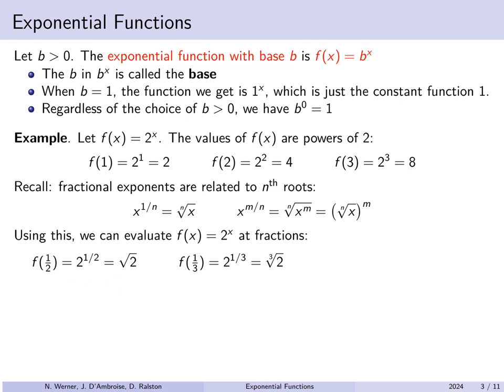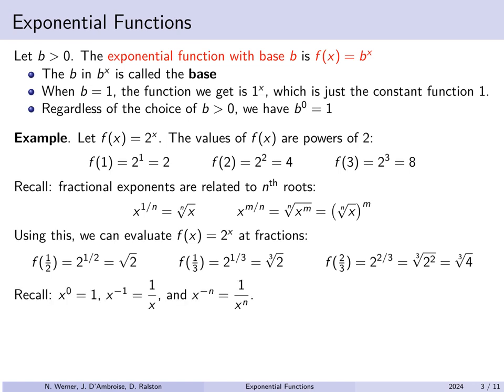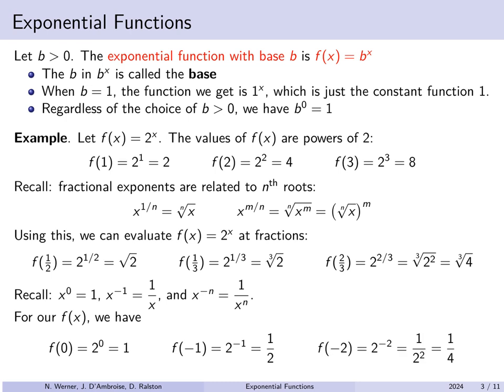Proceeding with f of x equals 2 to the x: f of 1 third would be 2 to the 1 third, that's the cube root of 2. f of 2 thirds would be 2 to the 2 thirds, which is the cube root of 4. x to the 0 is 1, x to the minus 1 is 1 over x, and x to the minus n is 1 over x to the n. So f of 0 is 2 to the 0, that's 1. f of minus 1 is 2 to the minus 1, that's a half. And f of minus 2 is 2 to the minus 2, or 1 quarter.